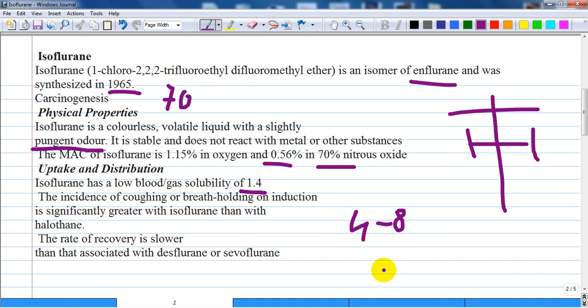However, the rate of induction is limited by the pungency of the vapor and in clinical practice may be no faster than that achieved with halothane. The incidence of coughing or breath-holding on induction is significantly greater with isoflurane than with halothane, which is pleasant or neutral.